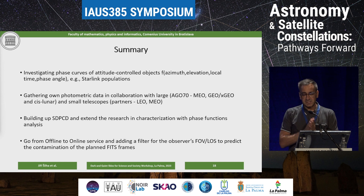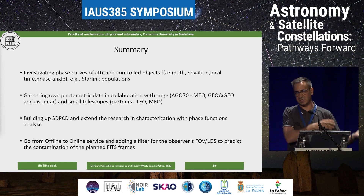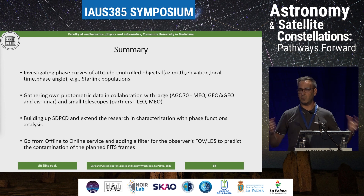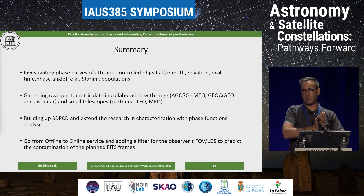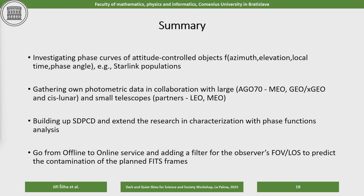In summary, we have phase functions done for the existing catalog, and we now want to look at active satellites like Starlink with different approaches. We want to gather photometric data extensively with a large telescope and with the private sector in Slovakia, covering every population from lower orbit to geosynchronous and cis-lunar orbits. We are building the Space Debris phase curve catalog to be published, and moving from offline to online service. The master's student is in his second year and the service should be done by spring next year — we would appreciate community feedback for refinement.